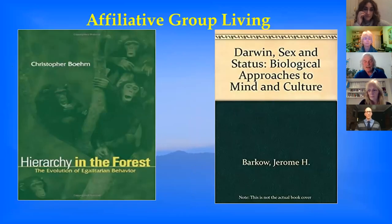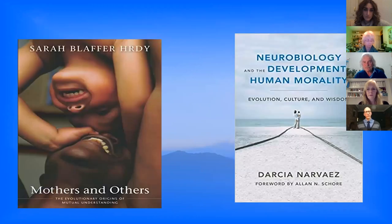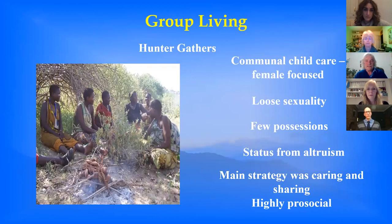There's quite a lot of evidence now that humans went through a period in their evolution where they became very focused on caring and sharing, very cooperative, and accumulation of wealth and resources was very much looked down upon — absolutely a no-no. That's basic hunter-gatherers: communal childcare, relatively loose sexuality, no control over sexuality, few possessions, status came from altruism and being caring. The main strategy was caring and sharing.